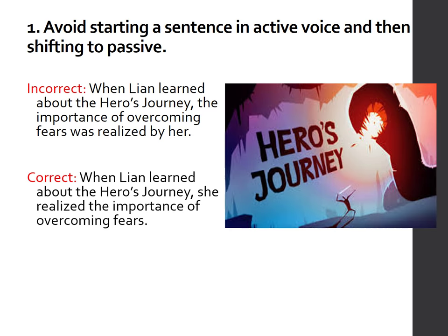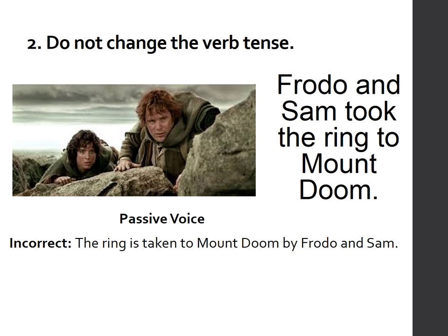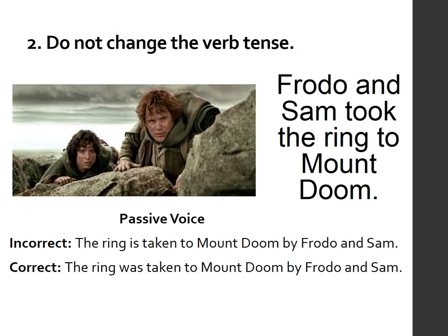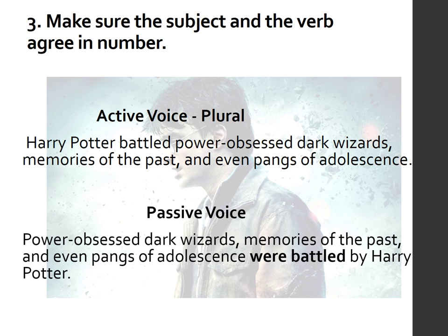The second version sounds much better. Number two: do not change the verb tense — whatever is given in the sentence, stick to it. Example: 'Frodo and Sam took the ring to Mount Doom.' 'Took' is in simple past tense. So you will not say 'the ring is taken to Mount Doom by Frodo and Sam' — that uses present tense. The correct answer is: 'The ring was taken to Mount Doom by Frodo and Sam.' Number three: make sure the subject and verb agree in number. 'Harry Potter battled power-obsessed dark wizards, memories of the past, and even pangs of adolescence.' Transformed: 'Power-obsessed dark wizards, memories of the past, and even pangs of adolescence were battled by Harry Potter.' The new subject is plural, so the verb must also be plural.